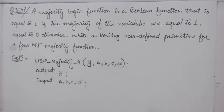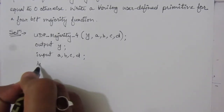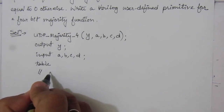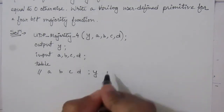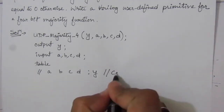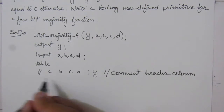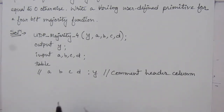Now we have to make a table that will represent this majority logic function for 4-bit variables. We'll consider all 16 combinations using 4 digits, and from that we'll find the majority function output Y. So here we write 'table', and then a comment line as the column header: A, B, C, D, and Y as the output.